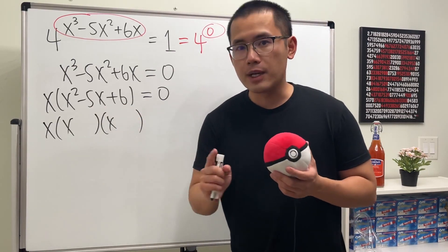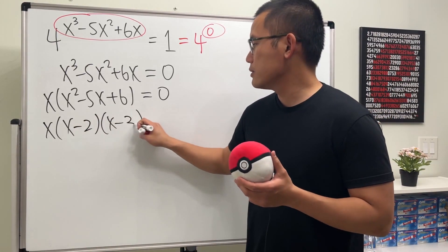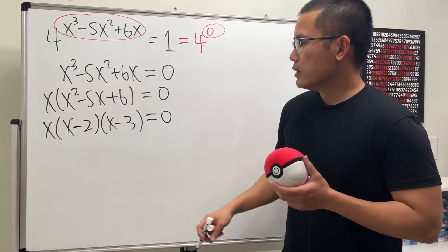And the correct combination is minus 2 and minus 3, and this is equal to zero.